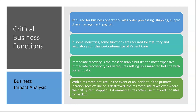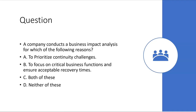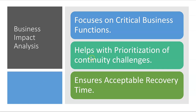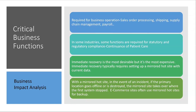If you don't have a mirrored hot site, there will be a lag in the time it takes between an event occurring and the business being able to operate at some capacity. Here's a practice question: A company conducts a Business Impact Analysis for which of the following reasons? A — to prioritize continuity challenges; B — to focus on critical business functions and ensure acceptable recovery times. Both A and B are correct, since a BIA helps with prioritization of continuity challenges and ensures acceptable recovery time.